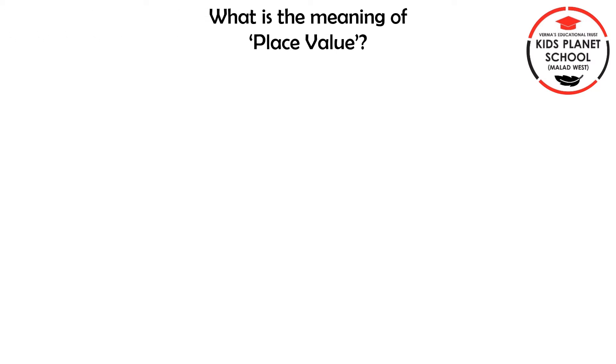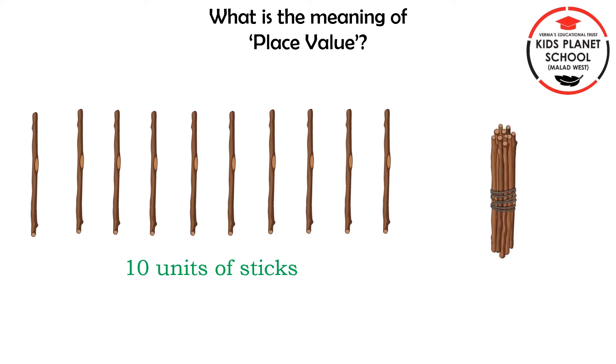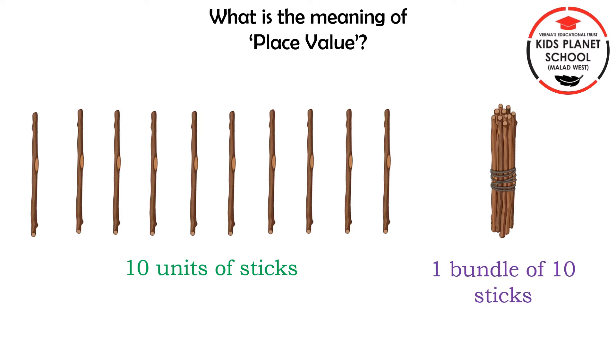Children, let us first learn what is the meaning of place value. Here, there are 10 units of sticks — that means 10 single sticks. If we tie up these sticks, we will get 1 bundle of 10 sticks, which means 1 ten.